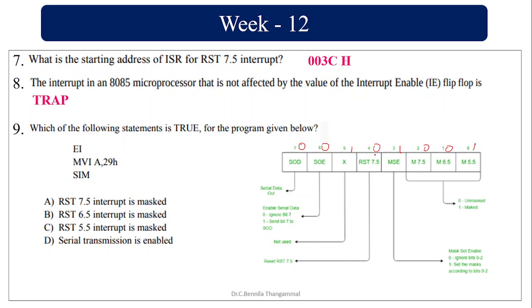We are not going to bother about the upper bits here. This is going to be 1 for mask set enable. If I want to enable the mask of 7.5, 6.5, 5.5 this should be enabled. And if 1 is now marked, 5.5 is marked. So RST 5.5 interrupt is masked.